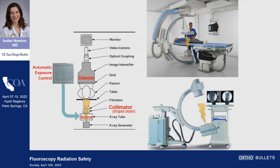Let's first do the anatomy of the C-arm. The source is where the x-rays come from, the photons come from, and they pass through the patient and are received at the detector in a differential pattern which creates your image. There's this thing called the automatic exposure control, which is like a feedback mechanism that says: I've received enough photons, I'm going to shut it off.